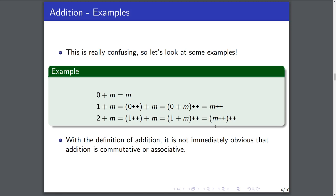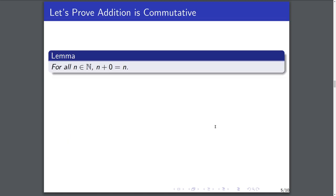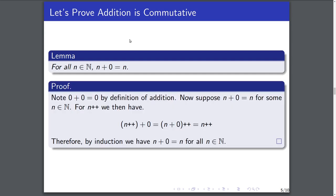We'll first prove that addition is commutative, and to do this we're going to need to prove one or two lemmas first. The first lemma states that for all natural numbers, n + 0 = n. You might say that was in the definition, but it's actually not — the definition says 0 + n = n. So the first step in proving commutativity is making sure we can flip that part of the definition. We're going to do this by induction.